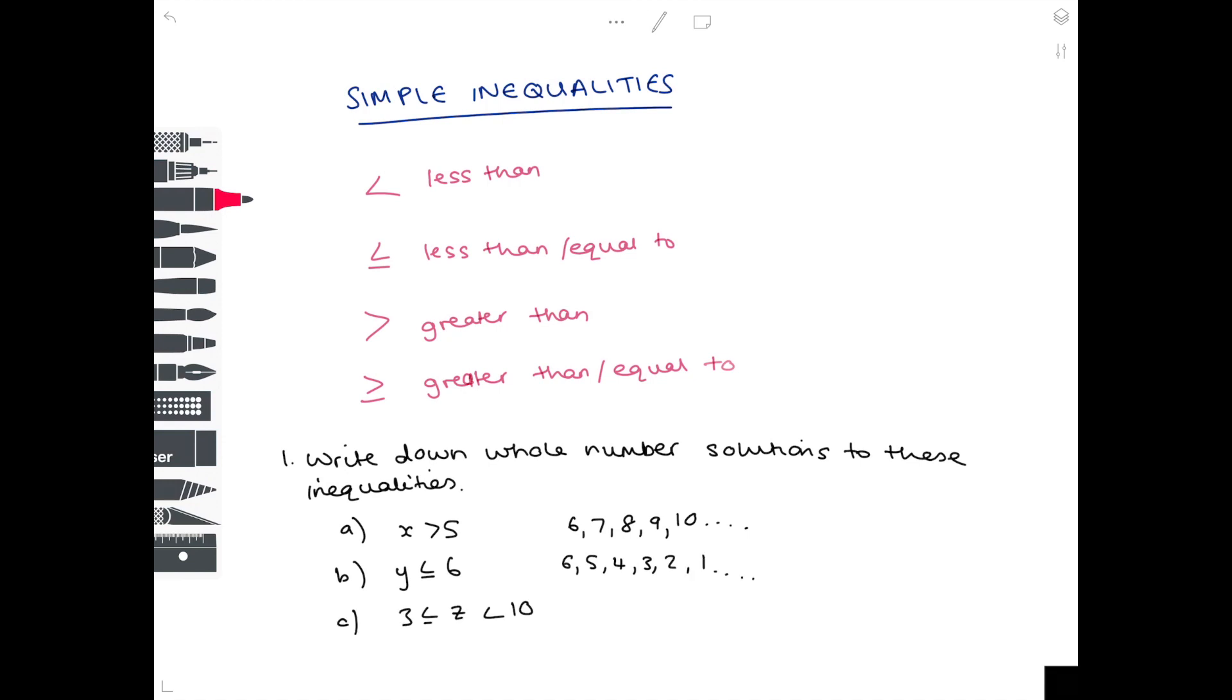And then getting more difficult with part c, we are looking for z values which are greater or equal to 3 but are less than 10. So that would be 3, 4, 5, 6, 7, 8, 9. And we can't count 10 because we don't have a line underneath that less than sign.